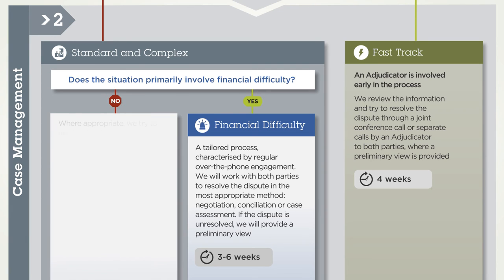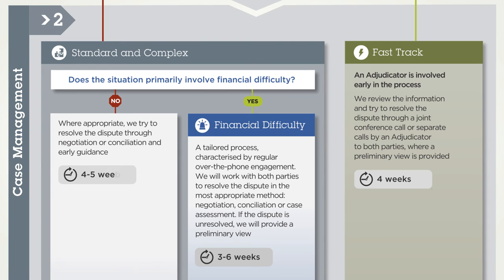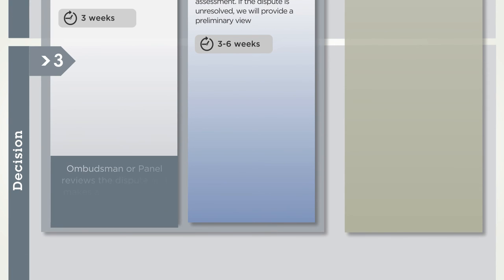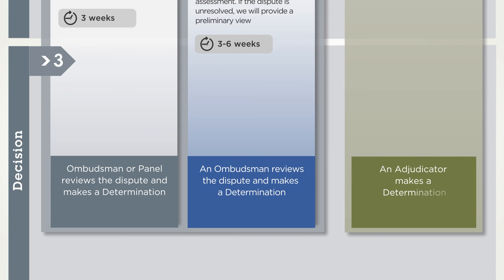If no, where appropriate, we try to resolve the dispute through negotiation or conciliation and early guidance. We provide a preliminary view on the merits of the dispute. If a dispute is not resolved by an agreement between the parties or through a preliminary view, then a decision about the merits of the dispute will be issued.